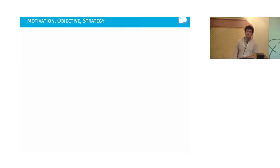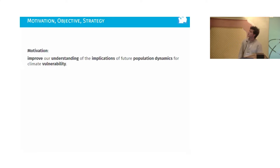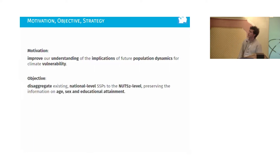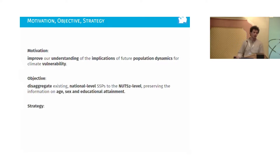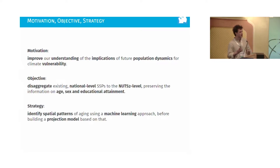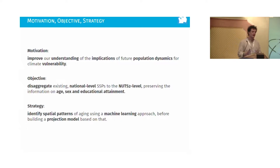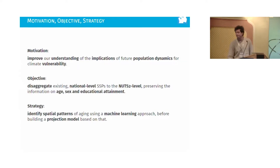The motivation is to improve our understanding of the implications of future population dynamics for climate vulnerability. Our objective is to disaggregate existing national-level SSPs at the NUTS2 level, preserving the information by age, sex, and educational attainment. How do we achieve this? We first identify the spatial patterns of aging and educational attainment development using a machine learning approach, and then use these to build the projection model.